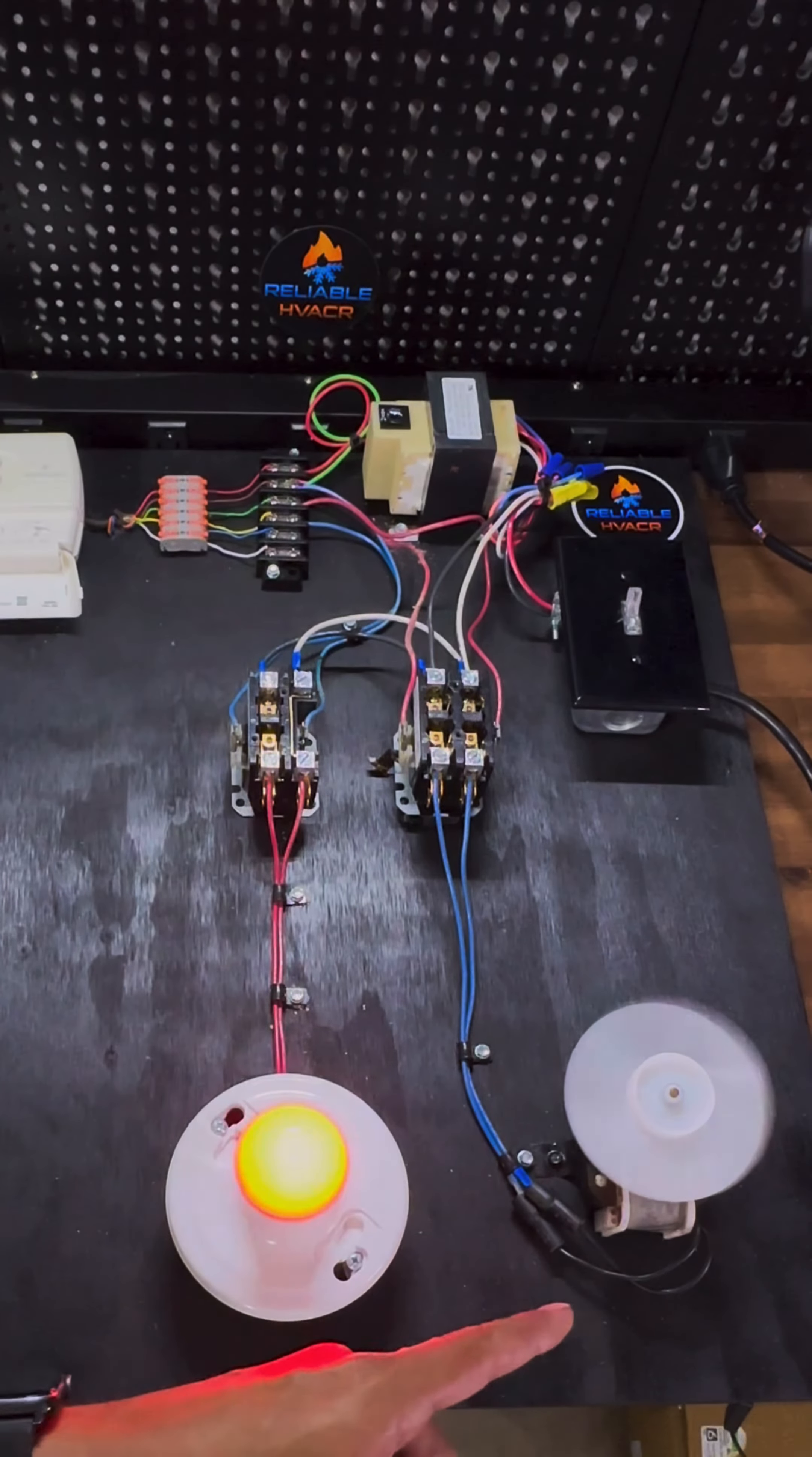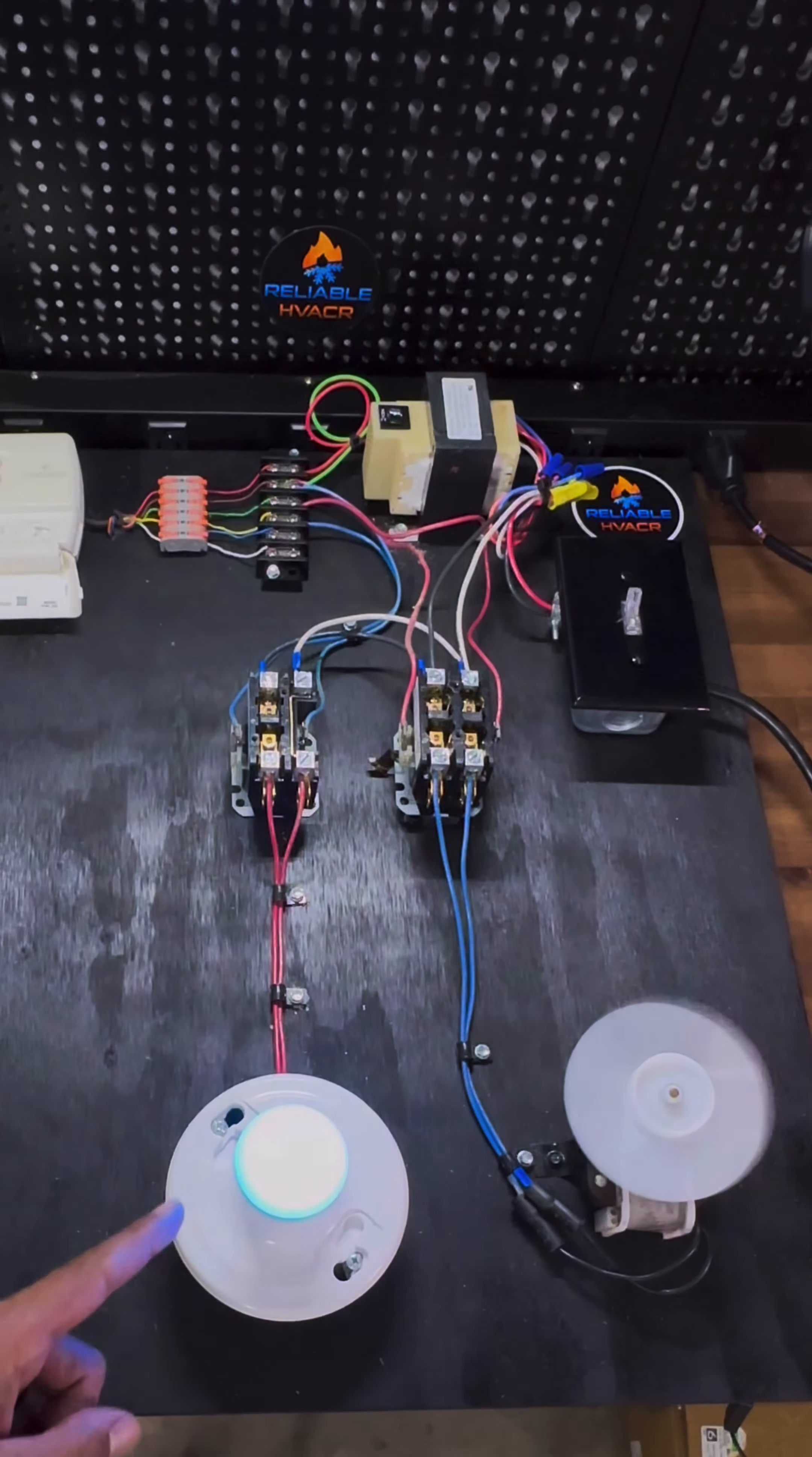Fan comes on - that's going to be your indoor blower motor. And then this is going to represent cooling, it's a little blue light.